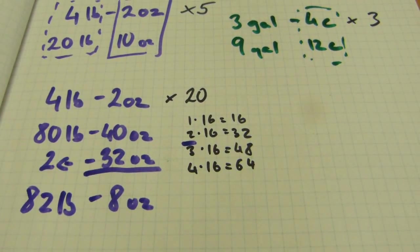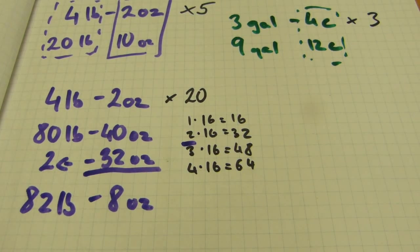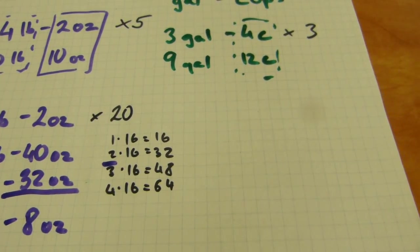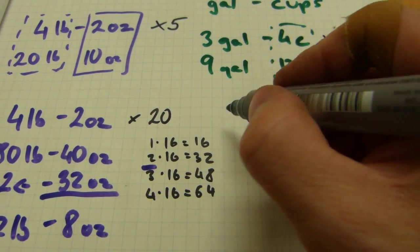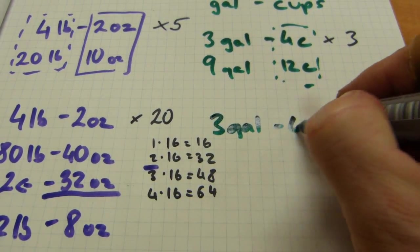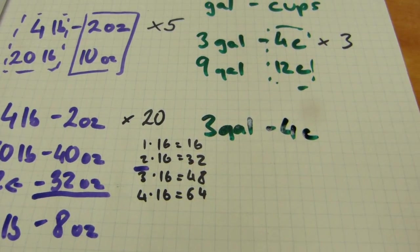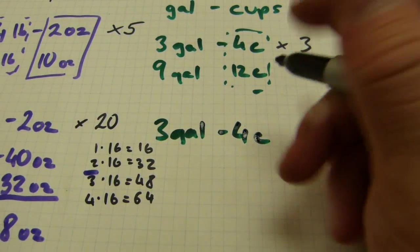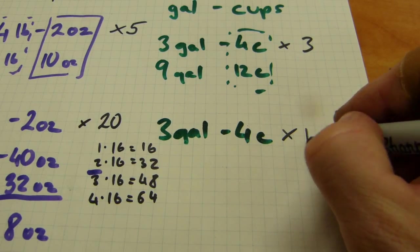So by and large the same works with gallons and cups. If we have, how about the same number, three gallons and four cups. And let's multiply it by, how about ten.